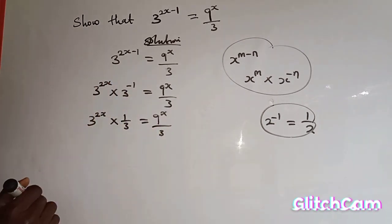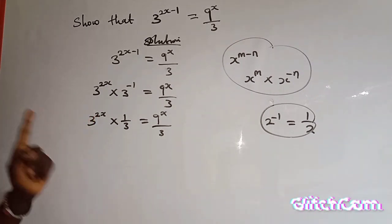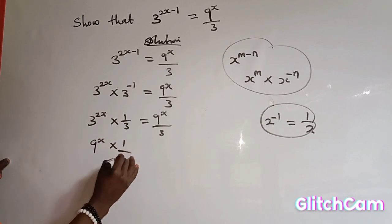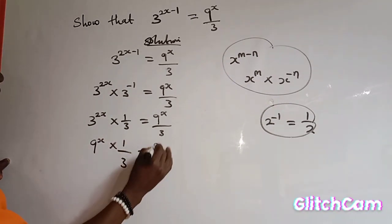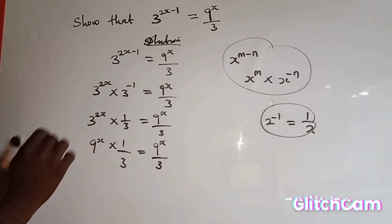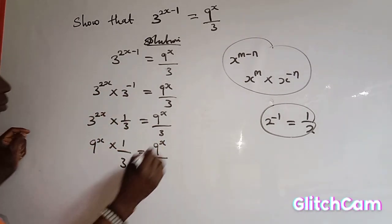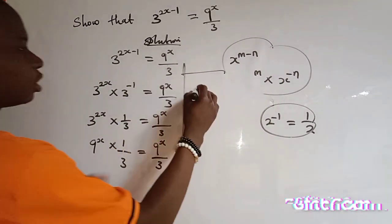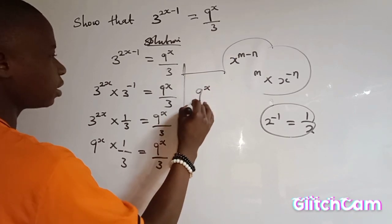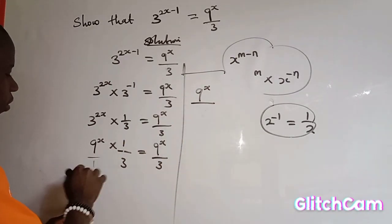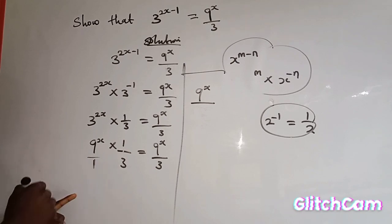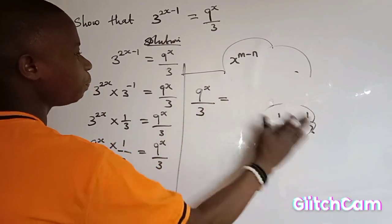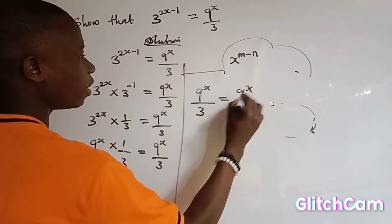So here now, 3 to the power of 2 is 3 times 3, which gives me 9s multiplied by 1 over 3, which is equal to 9 to the power of s over 3. And 9s multiplied by 1 gives me 9 to the power of s over 1. This one divided by 3 gives me 3, which is equal to 9 to the power of s over 3.